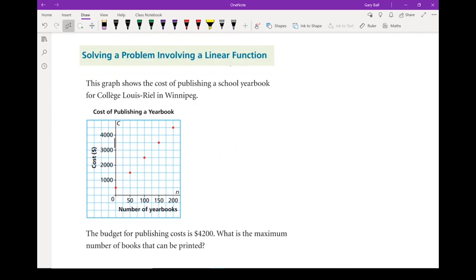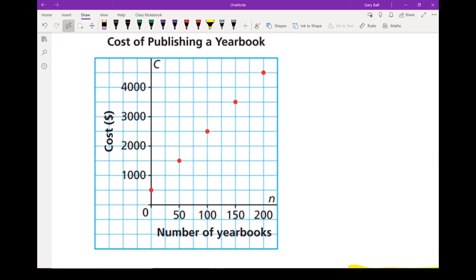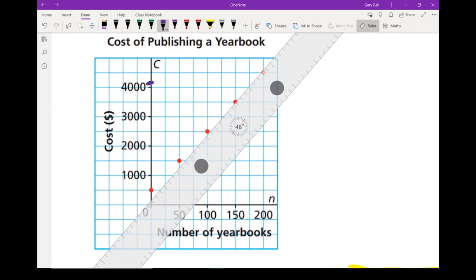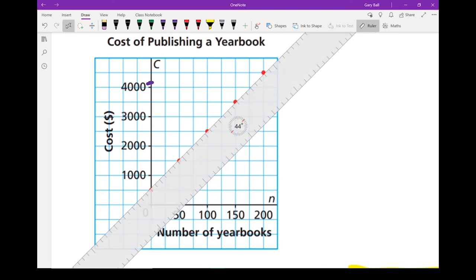Let's solve some word problems involving linear functions. So here we've got a graph that shows the cost of publishing a school yearbook. Now the real question is, this is the budget for publishing cost is $4,200. Now it's asking, what is the maximum number of books that can be printed for that cost? Let's zoom in on that graph a little bit right now. So we want to know if your budget is, your cost is about $4,200. We're looking somewhere right about there. And I want to know, using this graph, how many books can you get for $4,200? So I'm going to start off, I'm going to put a line here so it's easier to work with.